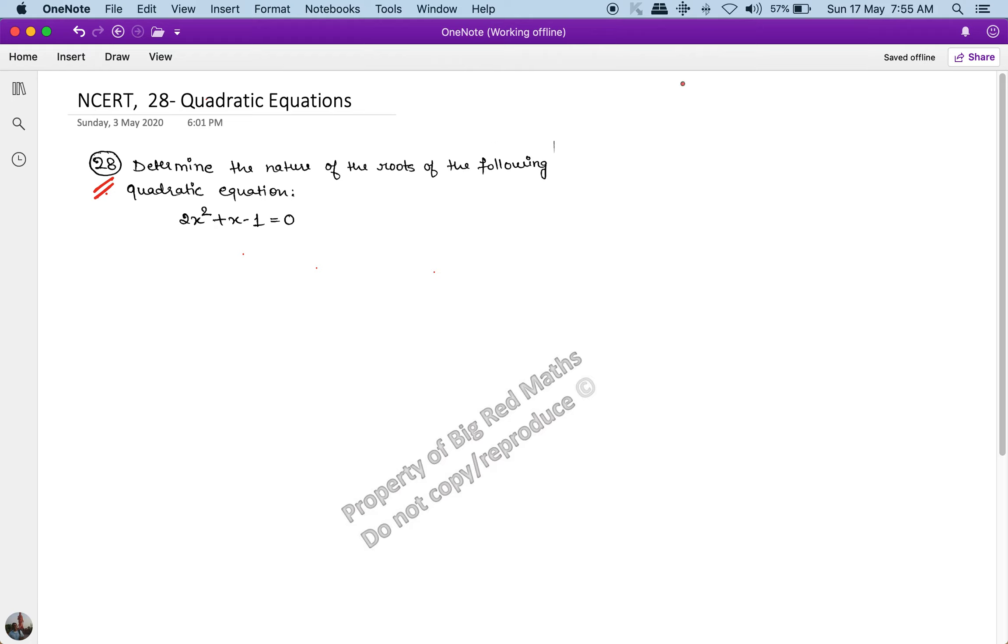The question says determine the nature of roots of the following quadratic equation. The nature of roots is determined using the discriminant, which is D equals b squared minus 4ac.